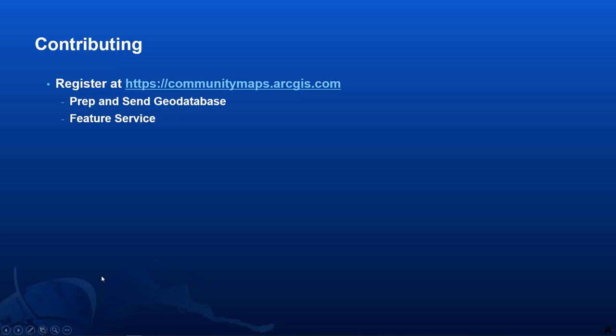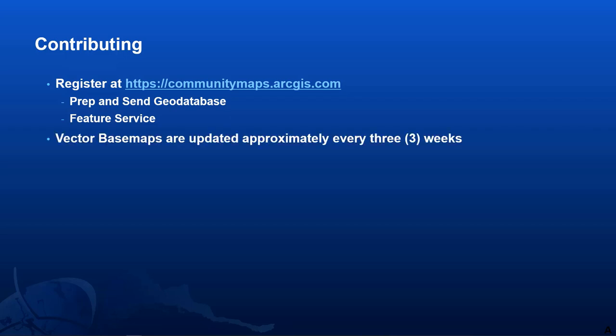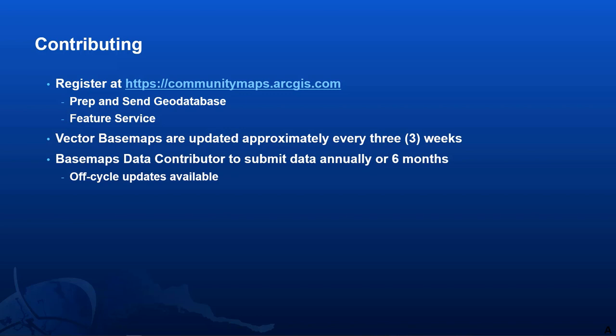Becoming a contributor is simple. You register at communitymaps.arcgis.com, you get approved, and you send your data as a prepped geodatabase or connect your feature services to our app to submit your data. Something to keep in mind is that Esri's vector base maps are recreated about every three weeks, so to help keep the base maps fresh, we suggest contributing once or even twice a year.